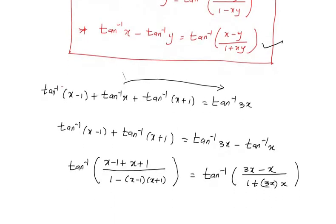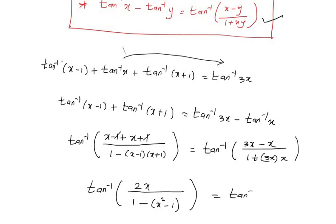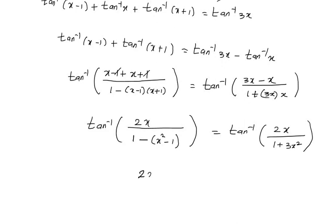Simplifying the left side: minus 1 plus 1 cancels, giving tan inverse of [2x divided by (1 minus (x squared minus 1))], which simplifies to 2x divided by (1 minus x squared plus 1), that is 2x divided by (2 minus x squared). The right side becomes tan inverse of [2x divided by (1 plus 3x squared)].